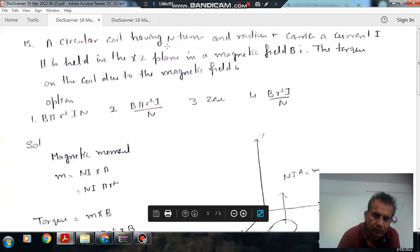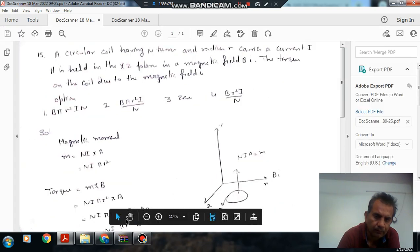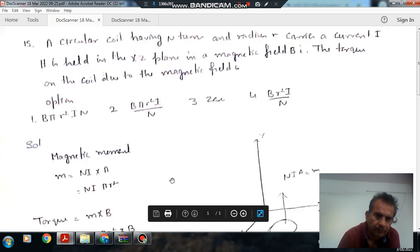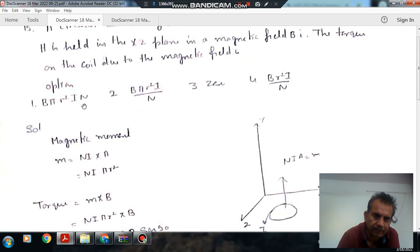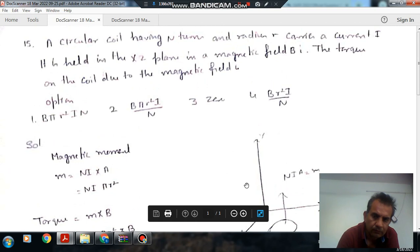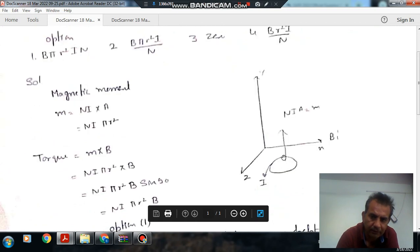Next, a circular coil having N turns and radius R carries a current i. It is held in the XZ plane in a magnetic field B. The torque on the coil due to magnetic field is: option 1, BπR²iN; option 2, BπR²i/N; option 3, 0; option 4, BR²i/N.